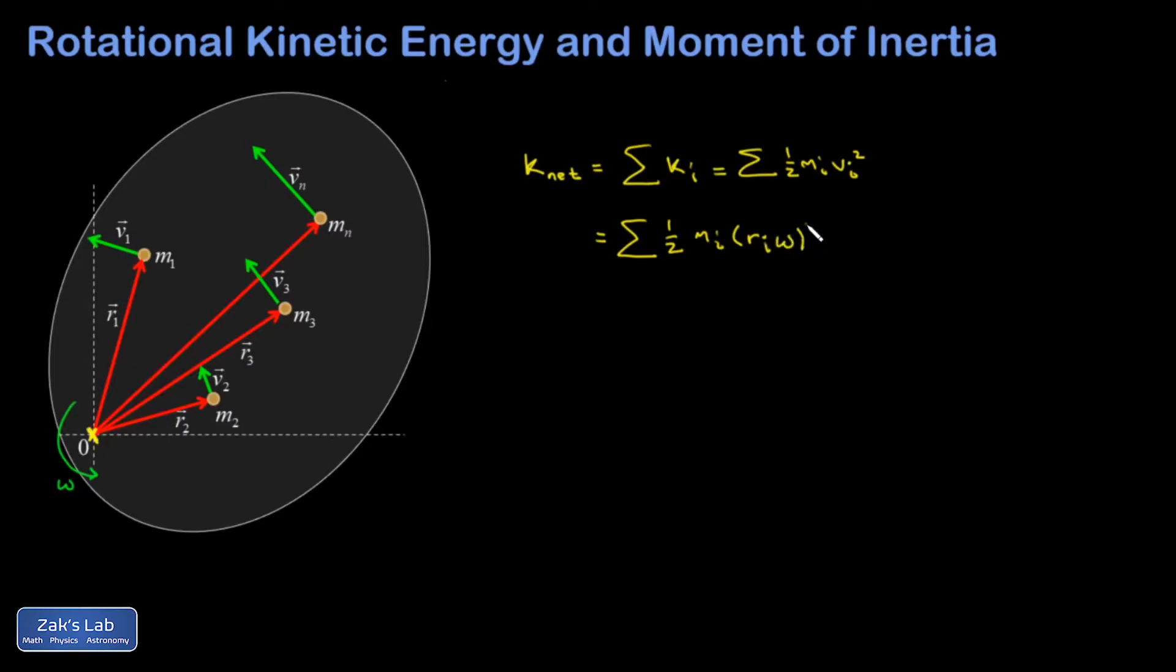I'll go ahead and square that, and while I'm at it, I'm going to move a one half out in front. So I get m_i r_i squared omega squared. So every term in the sum has the same exact omega squared in it. That allows me to factor it out.